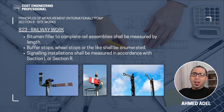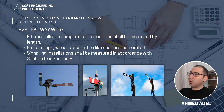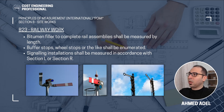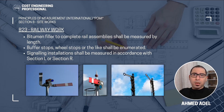Continuing with railway work: between-rail filler to complete rail assemblies shall be measured by length. Buffer stops, wheel stops, or the like shall be enumerated. Signaling installations shall be measured in accordance with Section L and Section R, which are the mechanical and electrical sections to be covered in future videos. I've grouped all previous Principles of Measurement International videos in a playlist — thank you for watching, and I'll see you in the next video.